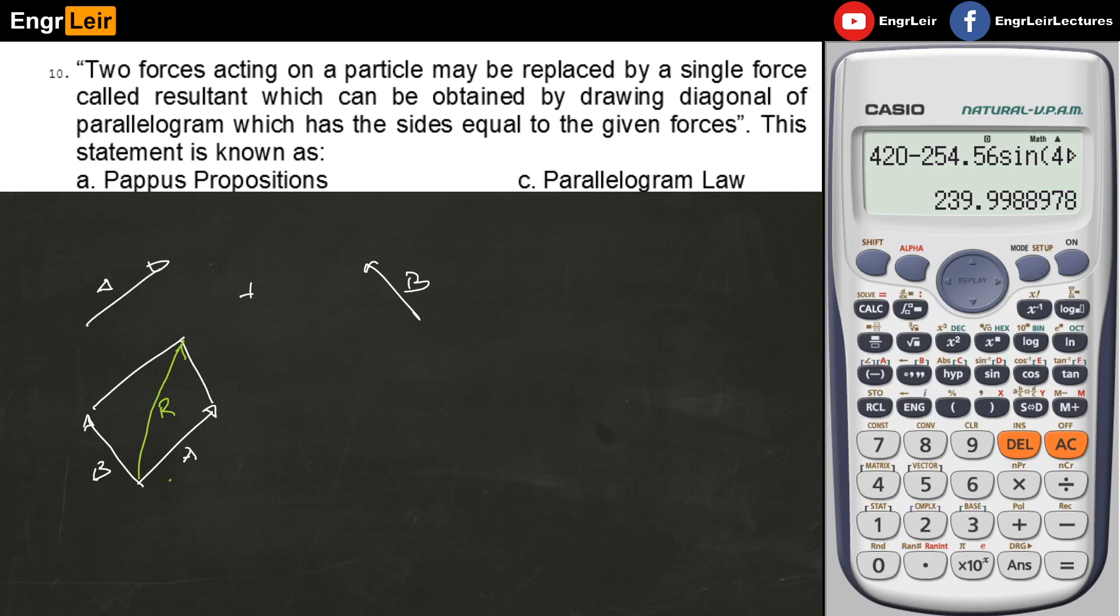What are the others? We have Varignon's Theorem, Pappus Propositions or I think the Pappus Theorems for volume, and principles of transmissibility. The Pappus Theorems I remember have something to do with volumes. If I have here a triangle, then you rotate it on this axis, it will create a shape like this with triangular section.